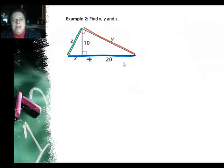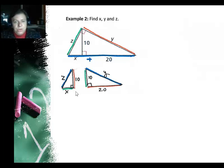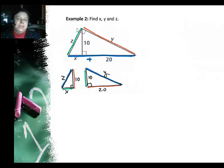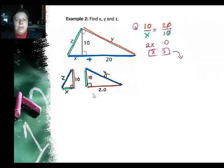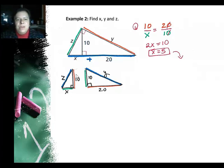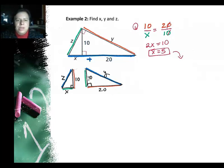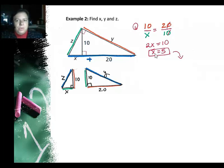In example two, we're doing exactly the same thing with numbers in slightly different positions. X is a small side and we actually know the altitude now. I used the hypotenuse to identify the blue sides on all triangles. Z is the short leg and is green, so I marked all short legs green, leaving the other legs as orange. To find X, I can say ten is to X as twenty is to ten — keeping the colors the same, orange is to green as orange is to green. Cross multiplying gives two X equals ten, so X equals five.